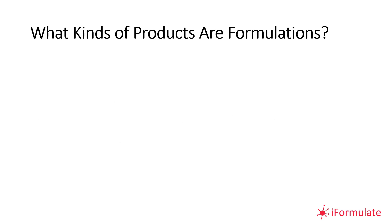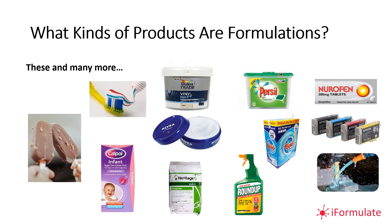So what kinds of products are formulations? There's a wide range you might come across as a consumer or industrial practitioner: toothpastes, paints, washing powders, pharmaceutical tablets, sprays or granules of agrochemical preparations, metalworking fluids, liquid pharmaceutical preparations, foods and drinks, and materials such as ice creams.